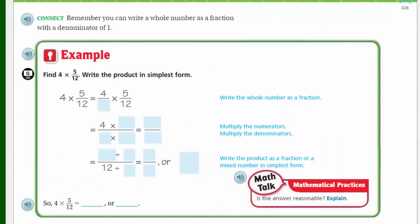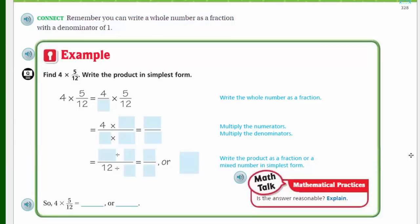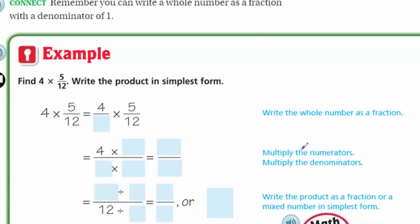What do we have here? It says connect. Remember, you can write a whole number as a fraction with a denominator of 1 — that is so important. And some of you may say, you know what, Mr. Wara, you already taught us that. The example is: find 4 times 5 twelfths. Write the product in simplest form. When we mean simplest form, we mean that we've divided out all common factors from the numerator and the denominator, giving us an answer that's in the most reduced form.